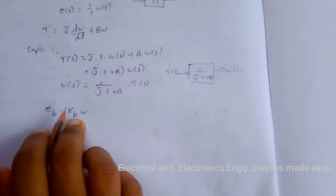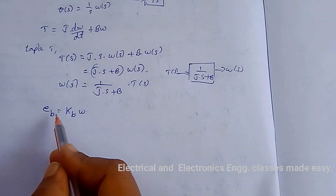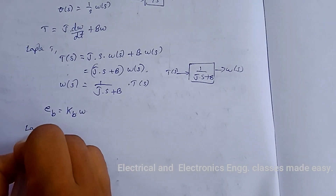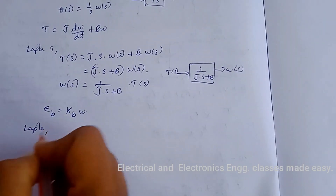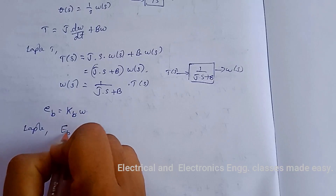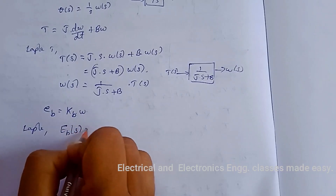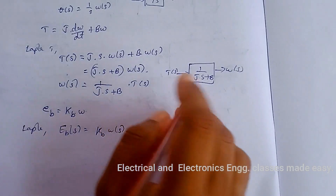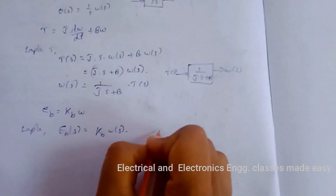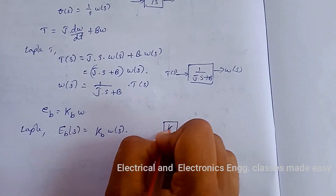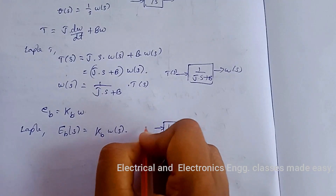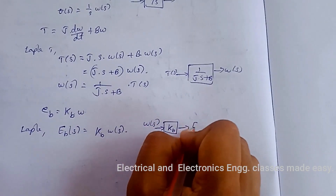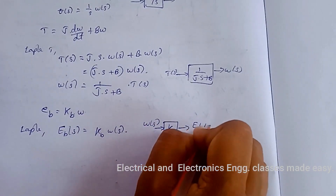The last equation is E_B = K_B · ω. Taking the Laplace transform gives E_B(s) = K_B · Ω(s). The block diagram has K_B as the transfer function, with input Ω(s) and output E_B(s).